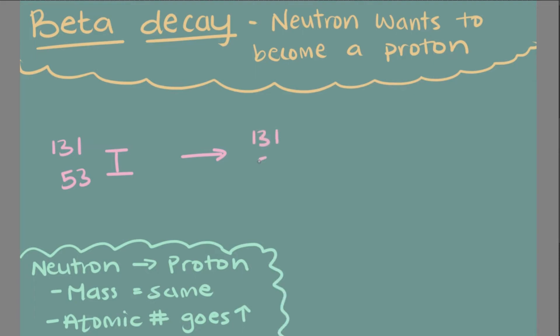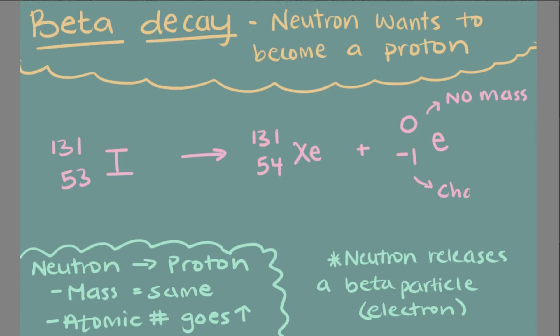For example, let's consider iodine. In an isotope of iodine known as iodine-131, beta decay can happen. Because the neutron becomes a proton, the atomic number of the atom will change, but the mass will remain the same because protons and neutrons are both found within the nucleus.